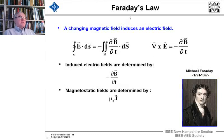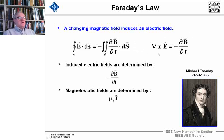Faraday's law says that a changing magnetic field induces an electric field. It's stated in integral form and in differential form. So if you have a magnetic field that changes in time, you'll get an electric field. Induced electric fields are determined by minus dB/dt, and magnetostatic magnetic fields are determined by mu zero in a vacuum times the current density.